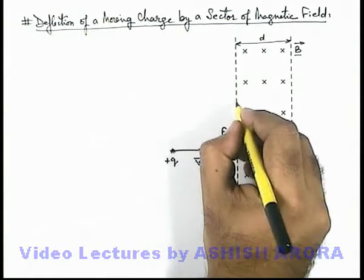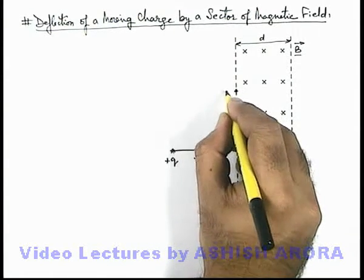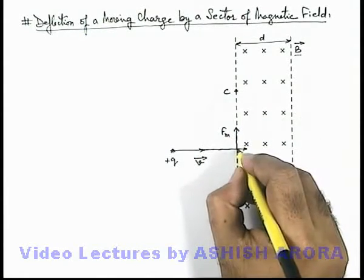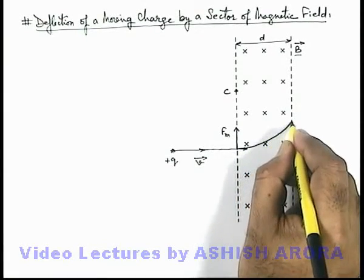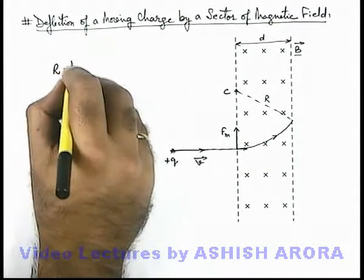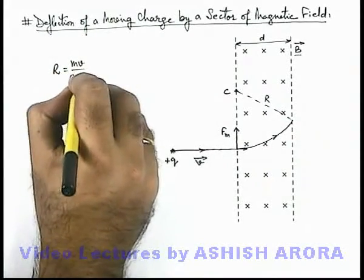Along this line only there exists a center of circular path along which it will move. And with respect to this center when the charge particle will move, in this situation the radius of this circle can also be given as mv over qb which we already studied.